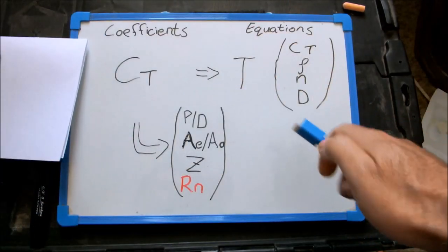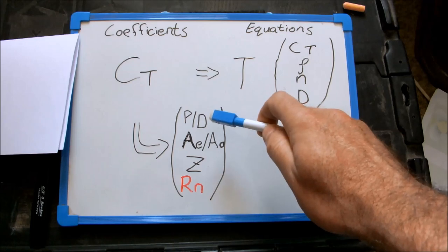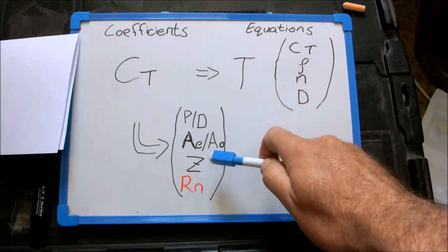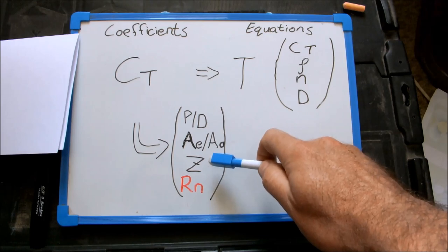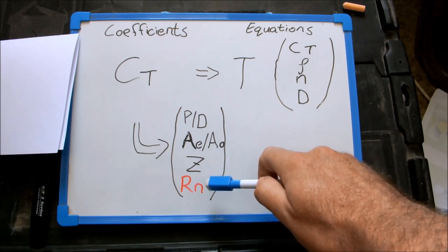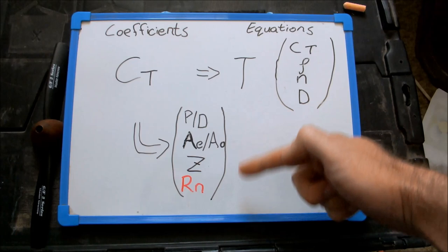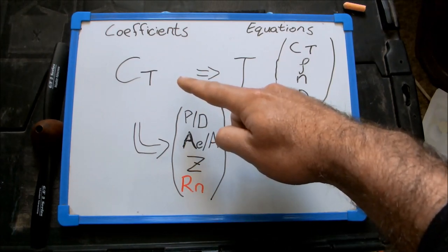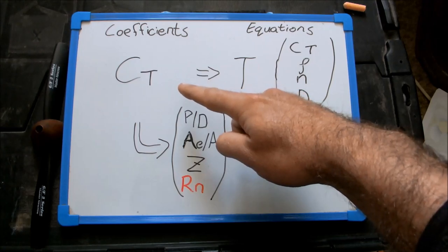These are the following: The pitch to diameter ratio. The expanded area ratio. The number of blades denoted as Z. And the Reynolds numbers. If any of these values change, then that set of coefficients is no longer valid and you need an entire new set of coefficients. These top three values are all specific to the propeller geometry.